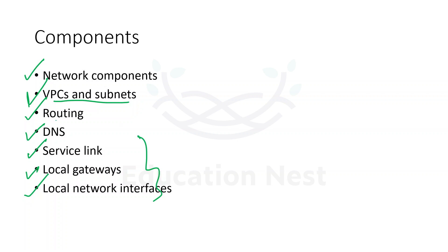By default, every Outpost subnet inherits the main route table from its VPC. You can create a custom route table and associate it with the Outpost subnet. Route tables for Outpost subnets work as they do for availability zones - you can specify IP address, internet gateway, local gateway, virtual private gateway, and peering connection as destinations.